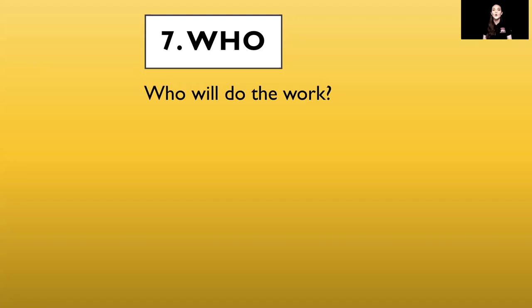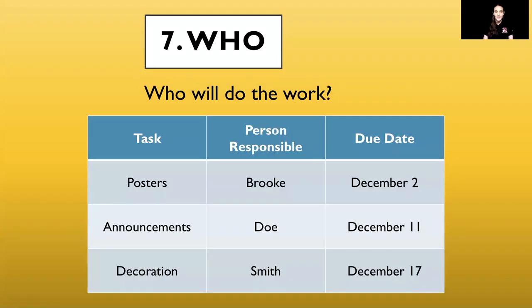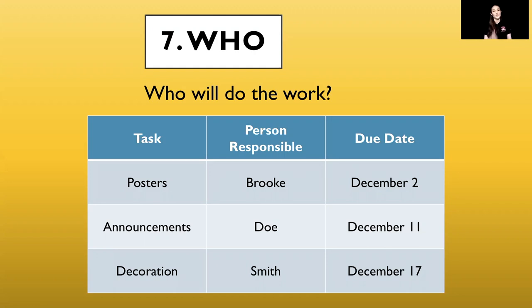Our seventh W focuses on 'who will do the work.' This will obviously look different from campus to campus and activity to activity, but here's a quick example. On the left we have a list of tasks that need to be completed; in the center, the person responsible for completing that task; and on the right, the due date for when that task needs to be completed. The first task is posters — I will take responsibility to get those completed by December 2nd.